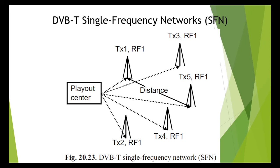The GPS satellites radiate a 1 PPS — that is, pulse per second — signal. A 10 MHz oscillator in professional GPS receivers is locked to this 1 PPS signal, which in turn acts as a reference signal for the DVB-T transmitters.